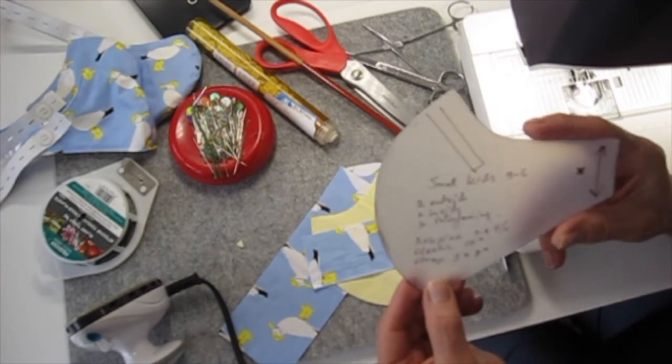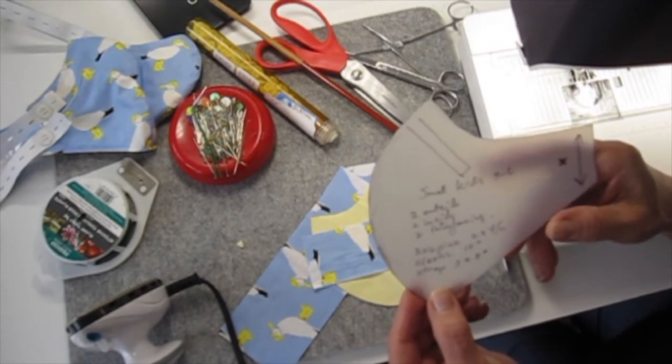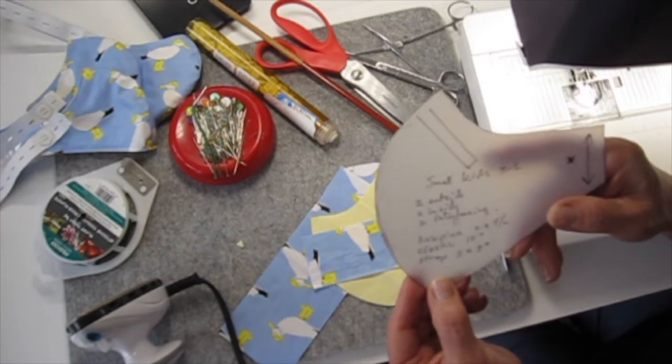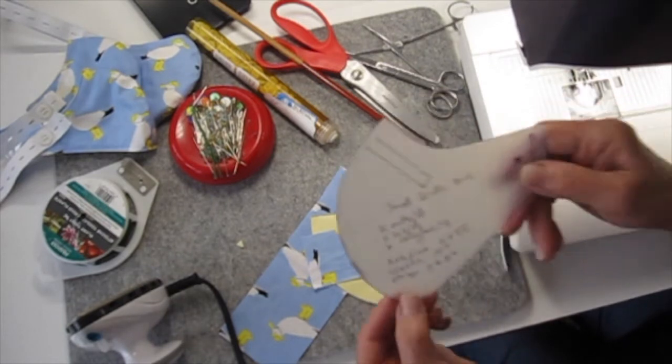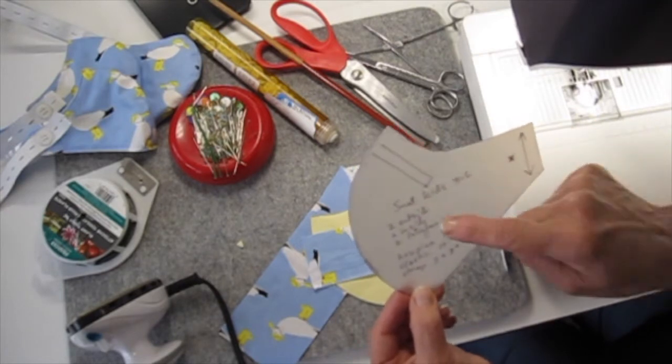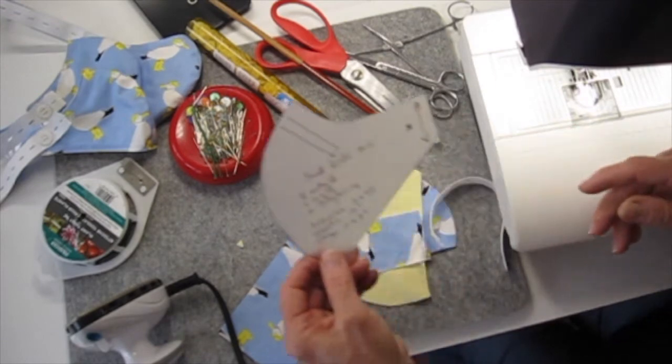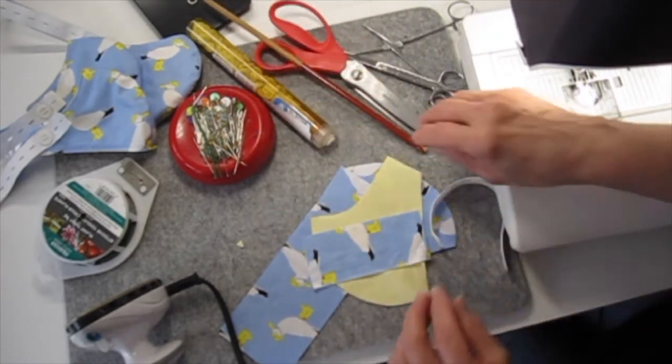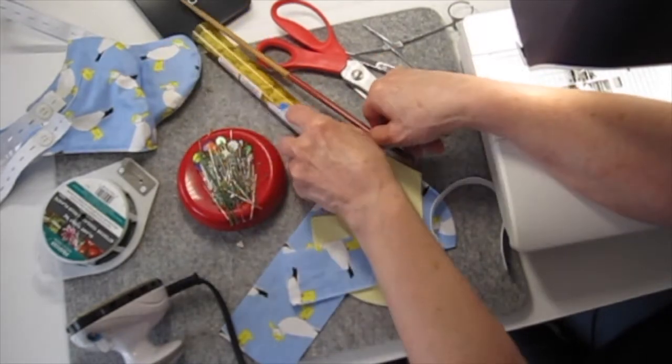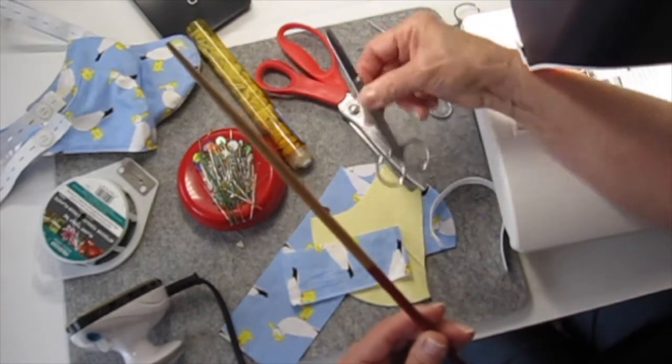So non-woven fusible interfacing, thin. You want something like Pellant's featherweight. That's a very good one to use for this. So here's the pattern. I just trace around it with a pen, cut out inside and outside. Interface if you choose. Other things you're going to need: some pins, a button, chopstick for turning things right side out, pair of scissors.